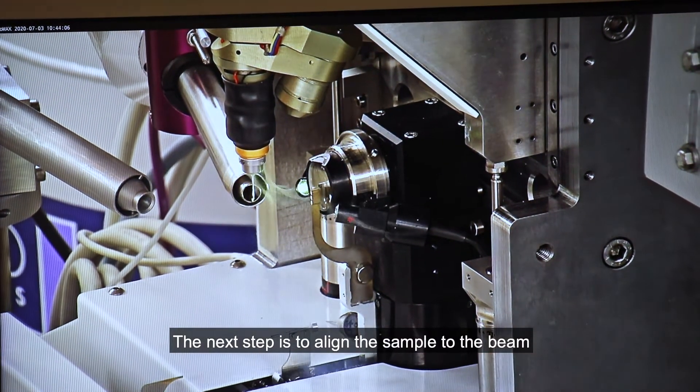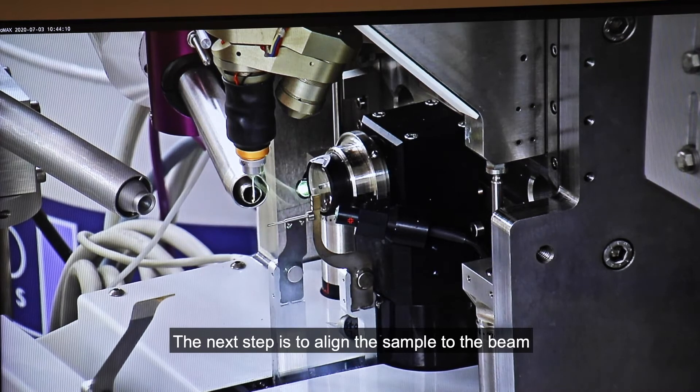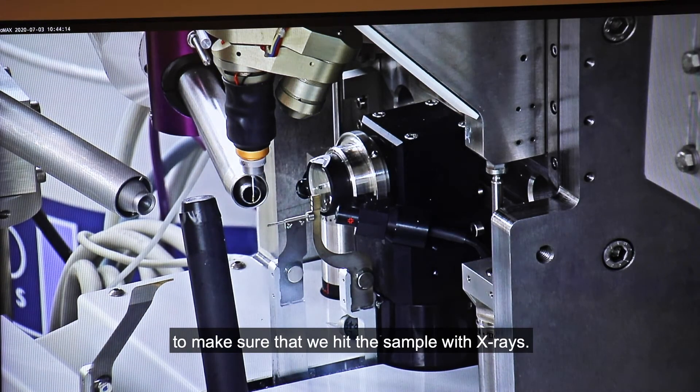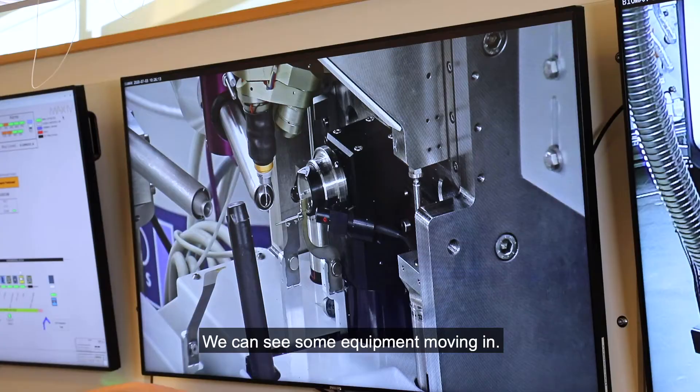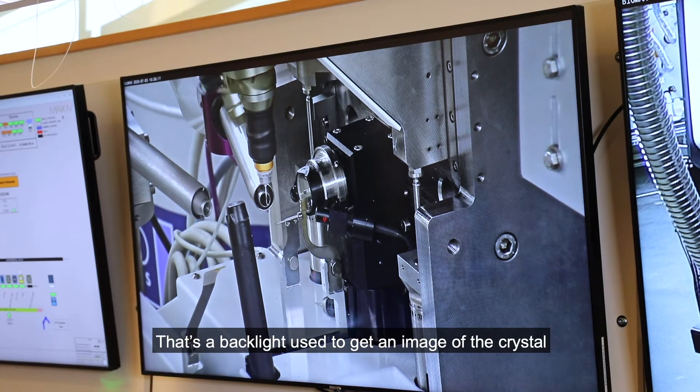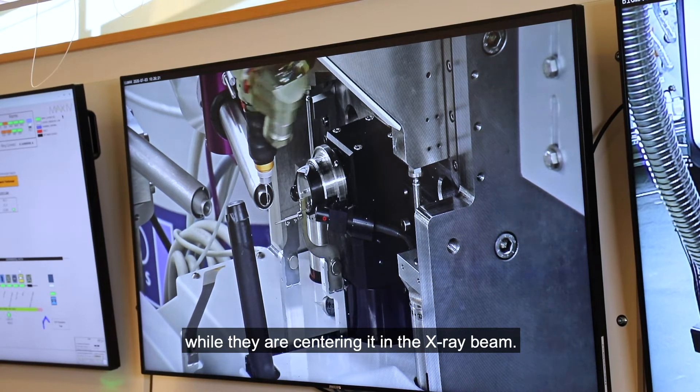The next step is to align the sample to the beam to make sure that we hit the sample with the x-rays. So we can see some equipment moving in. That's a backlight to get a nice image of the crystal while they are centering it in the x-ray beam.